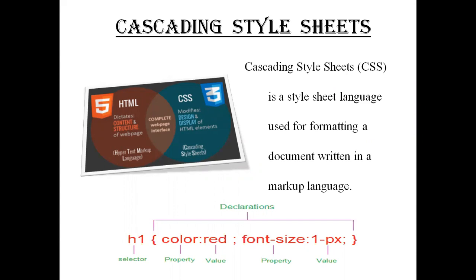For a flashback, CSS is a style sheet language which is used for formatting HTML documents. Tags were used in HTML, but in CSS we will be using different types of selectors with properties and values. Properties are separated with a semicolon and the property and value is separated with a colon. All the properties are enclosed in curly braces. This was a flashback of CSS.